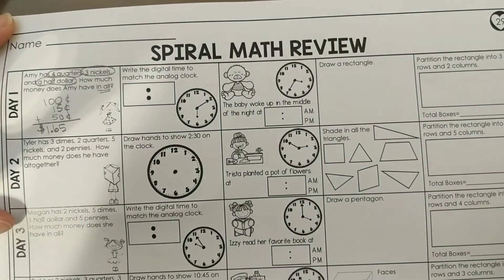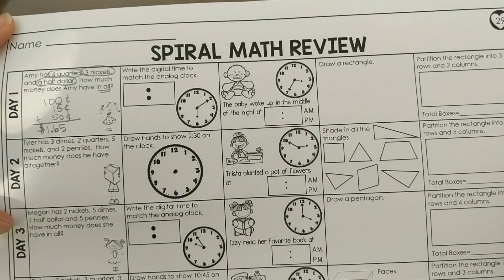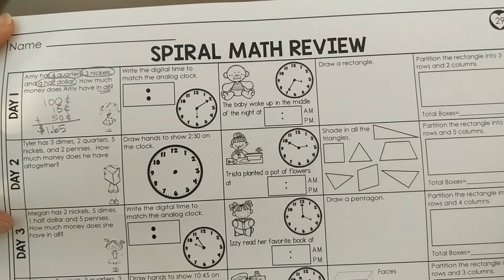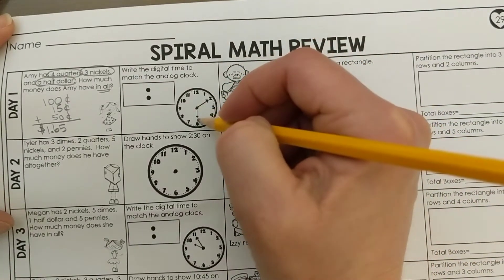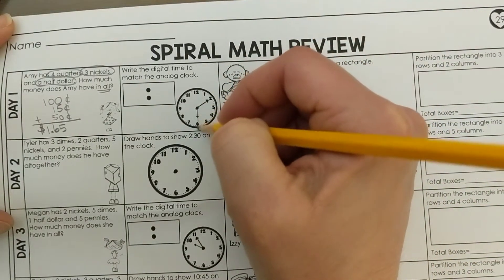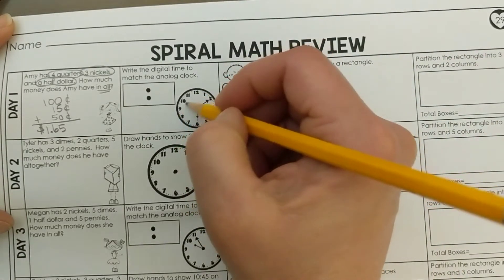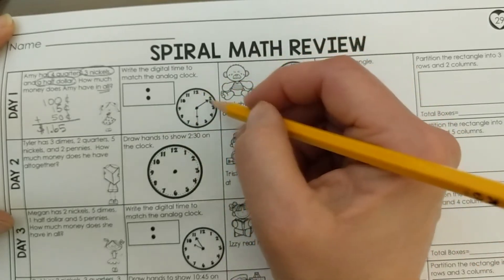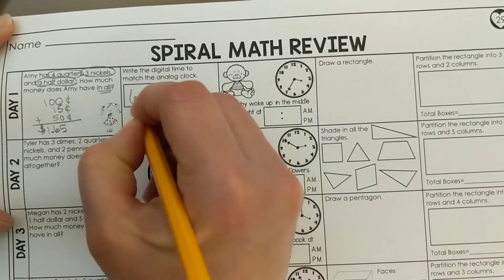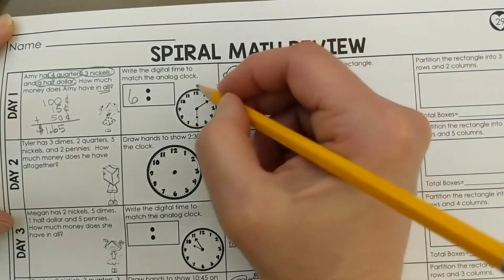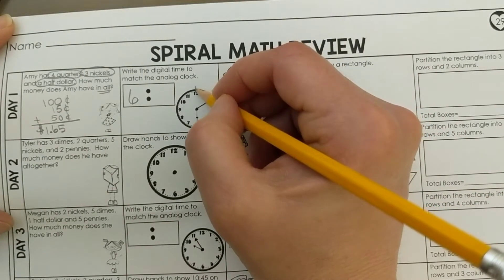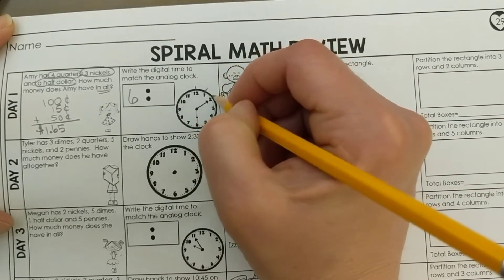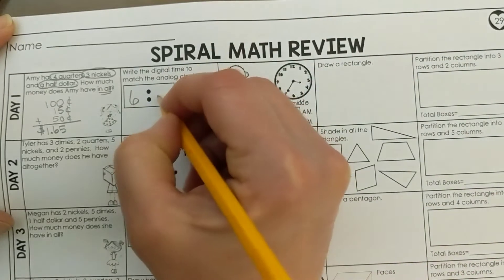We need to write the digital time to match the clock. It is pointing at the 6. I know it's not close to the next hour because my hand is not on this side of the clock, so it is already 6 o'clock. And the minutes, I start counting: this is 0, 5, 10. So it is 6:10.